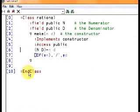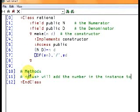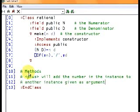Okay, let's create a new method. We want to do the plus method. Plus will add the number in the instance, the one we have here, to another instance given as an argument.